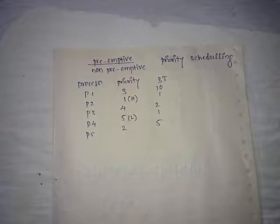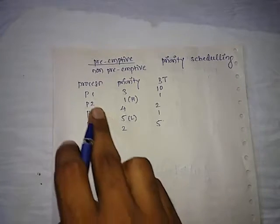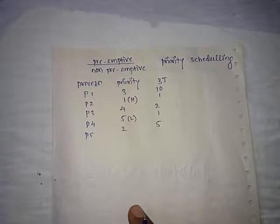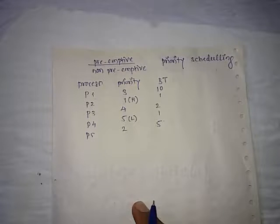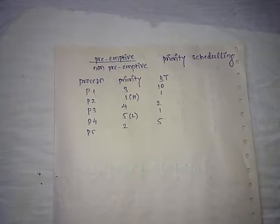that means it is a non-preemptive task. Here, the question involves five processes P1 to P5 with priorities given. The lowest number indicates the highest priority, and the highest number indicates the lowest priority. You have to check this in your question. The corresponding burst times are also given.